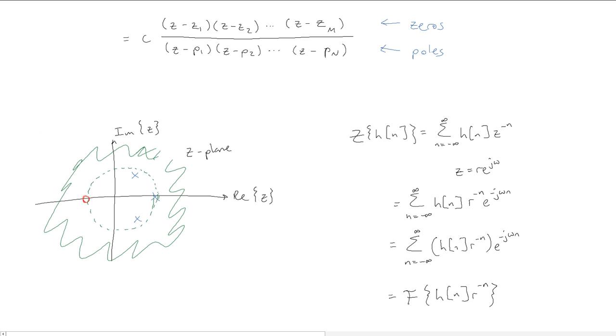This is the same as we saw in the video on the z-transform's poles and zeros, and we have this associated region of convergence defined by the poles.